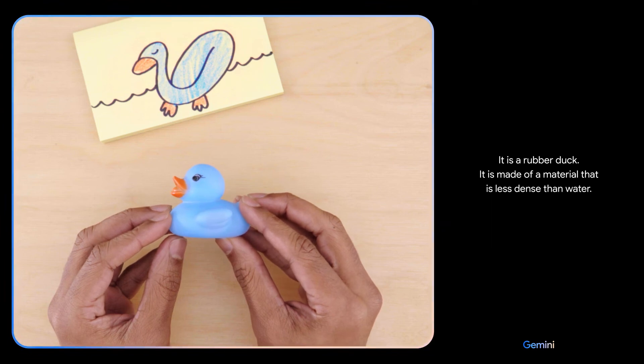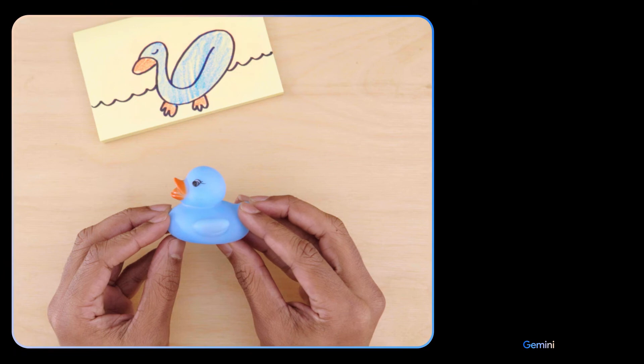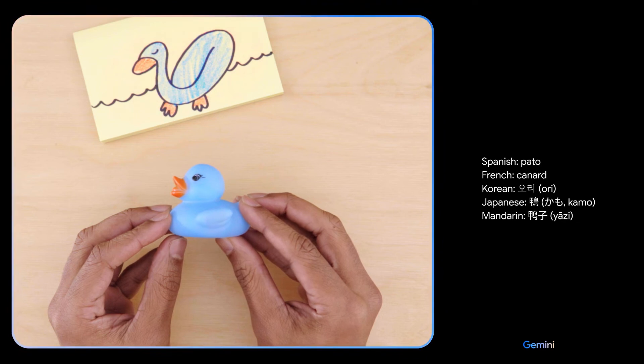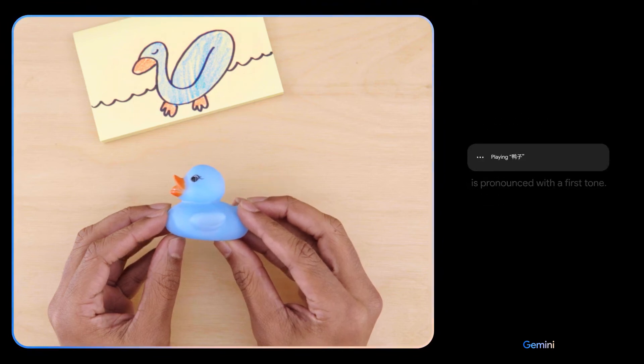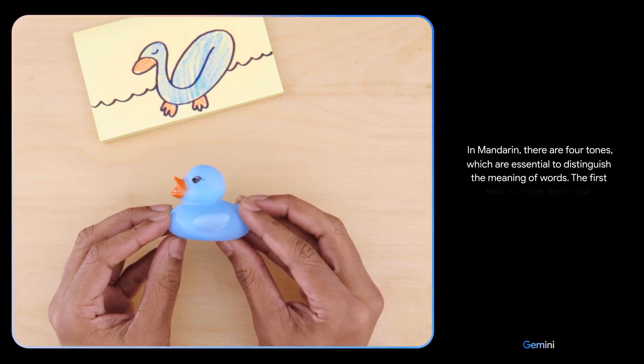Can you teach me how to say this in a different language and give me a few options? Oh, can you explain how to pronounce the Mandarin one? Is it 'ya'? It's 'ya'. It's 'ya' is pronounced with a first tone in Mandarin. There are four tones which are essential to distinguish the meaning of words. The first tone is a high level tone.